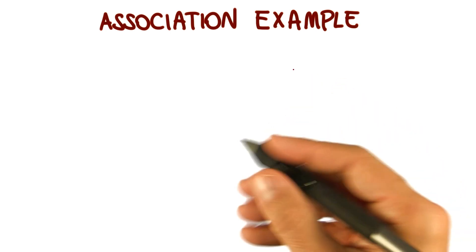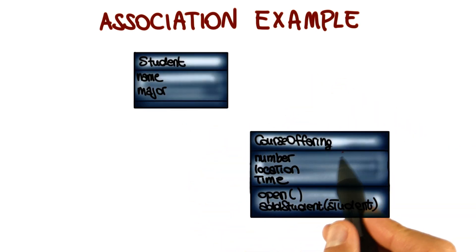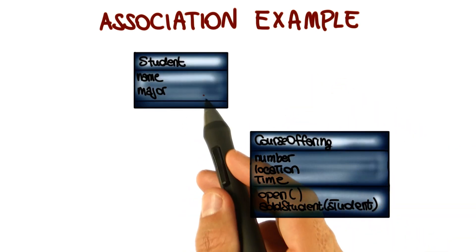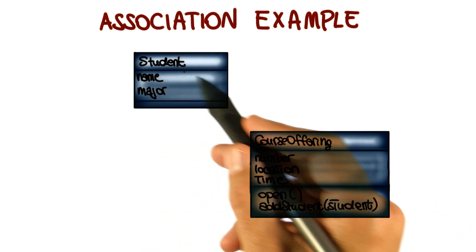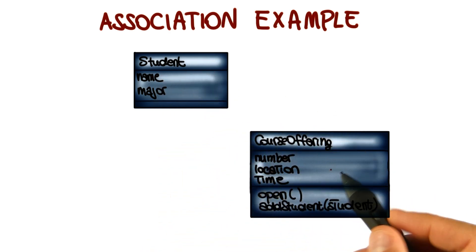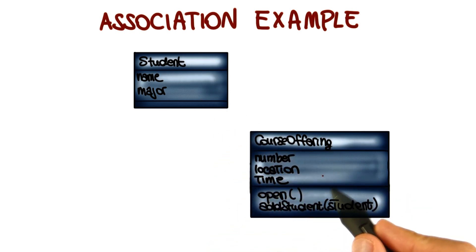Let's see what that means by considering two classes in our example system: the Student class and the CourseOffering class. In this case, there is an association between the Student and the CourseOffering because the student is registering for the course offering. So in a sense, the course offering has students, contains students.